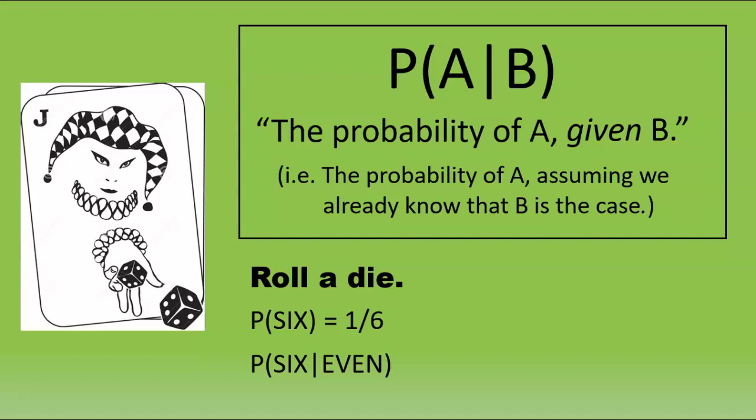It may help to imagine that I've rolled a die and asked you to guess how likely it is that I've rolled a 6. But before you guess, I give you some extra information. The result is definitely even. In that case, you know that I didn't roll a 1, a 3, or a 5. There are, in fact, only three possible even numbers I could have rolled, so the probability will have a denominator of 3.